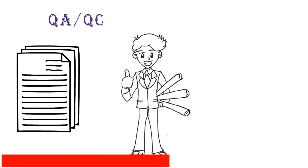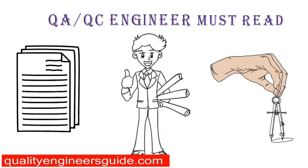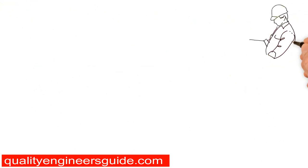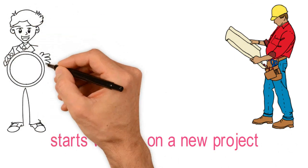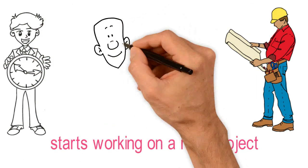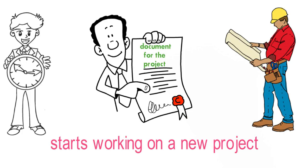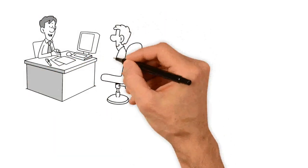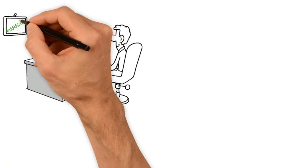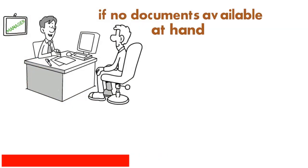Project documents that a QA or QC engineer must read before starting work. Before a QA or QC engineer starts his or her work on a newly opened project, he or she must initially take the time reading the important documents constituted on the project. The QA or QC engineer shall ask the documents from his quality manager if there are any documents available at his or her hand.